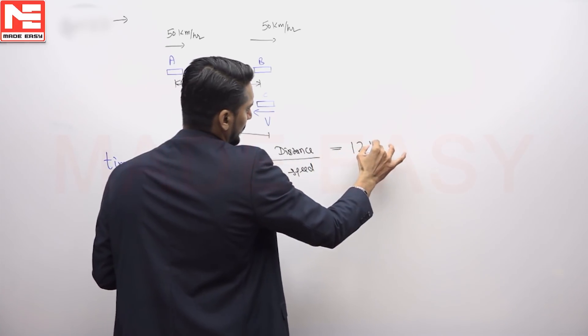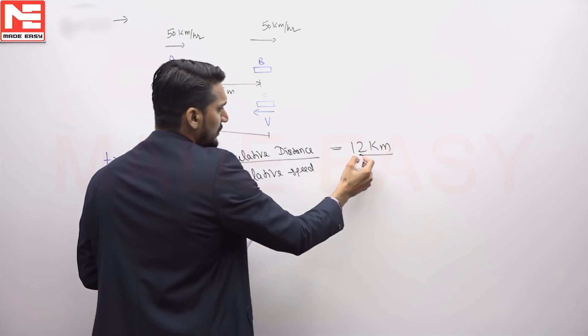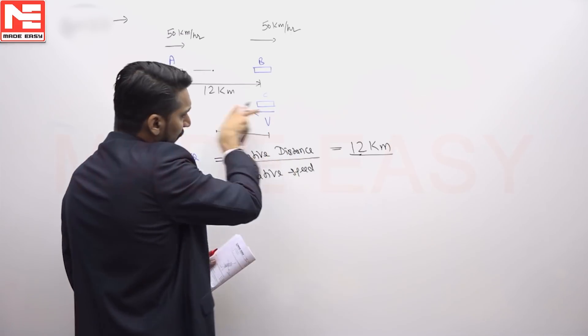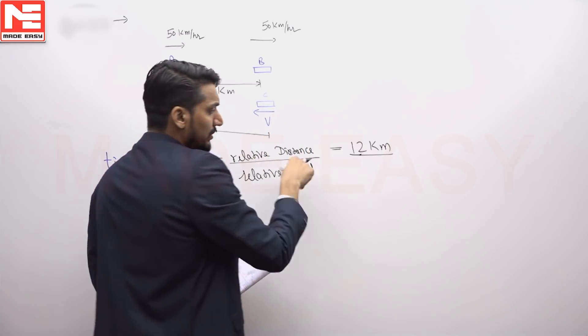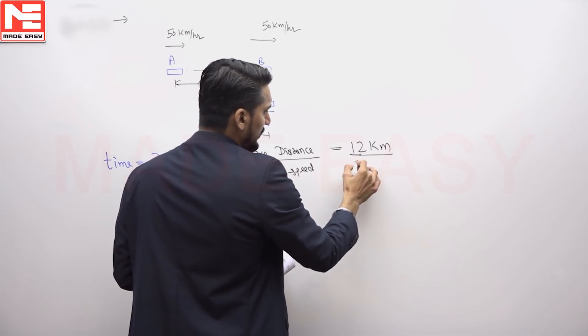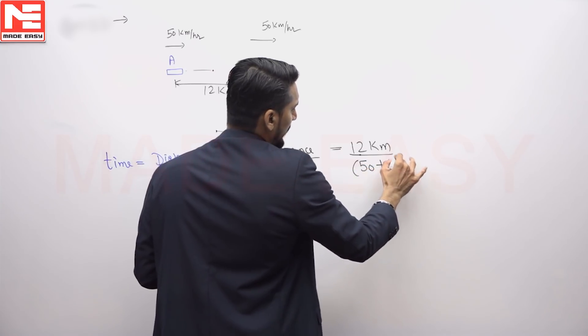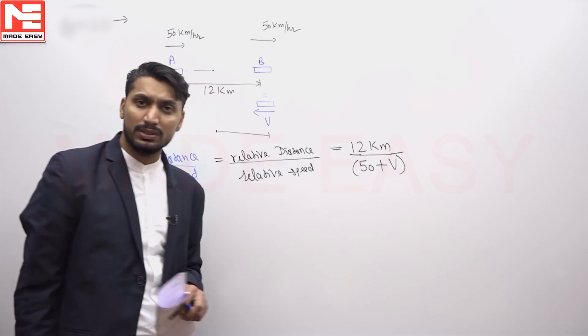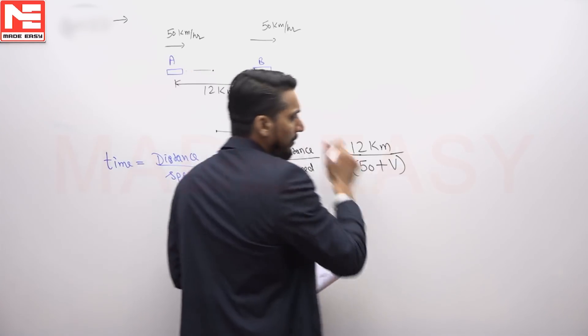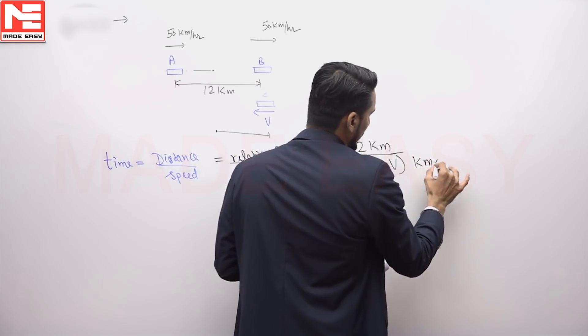What was the relative speed? It is 50 and V, so it is going to be added because they are in opposite directions. Relative velocity will be added if the speeds are in opposite directions, so it is going to be 50 plus V kilometer per hour.